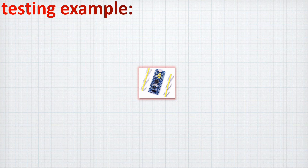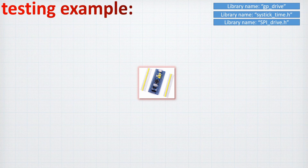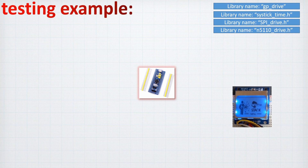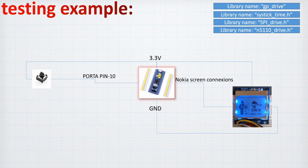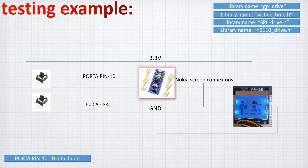Now let's look at our testing example. We have our STM32F1, the blue pill, connected. We will use the GPIO driver library, the SysTick library, and the SPI driver library — all three to build the N5110 driver library. Copies of these libraries are available in the description below. The Nokia LCD screen is connected to the STM32F1, with port A pin 10 and port A pin 9 configured as digital inputs. These two digital inputs from the switches will control the animation we display on the Nokia screen.